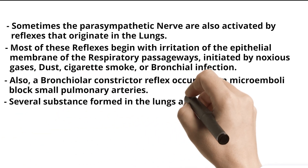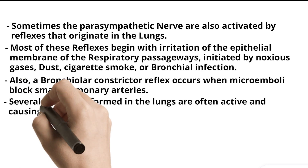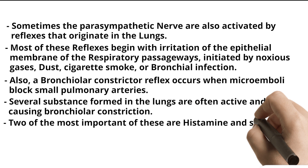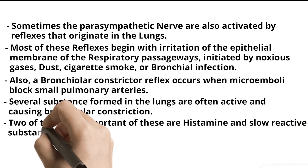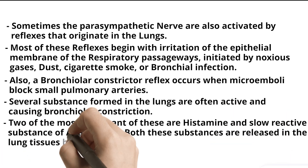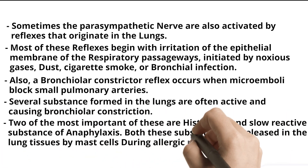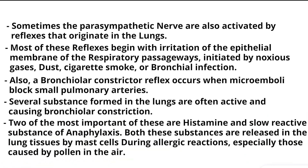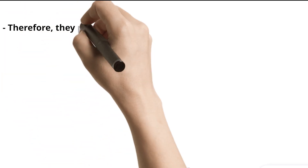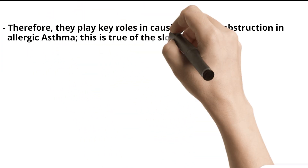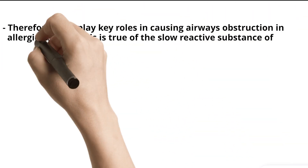Several substances formed in the lungs are often active in causing bronchiolar constriction. Two of the most important are histamine and slow reactive substance of anaphylaxis. Both these substances are released in the lung tissues by mast cells during allergic reactions, especially those caused by pollen in the air. Therefore, they play key roles in causing airway obstruction in allergic asthma.